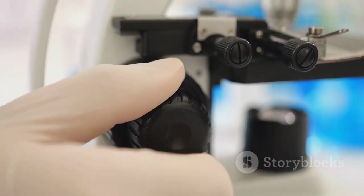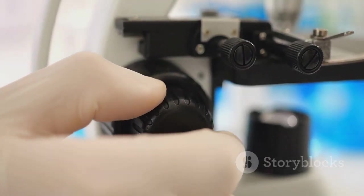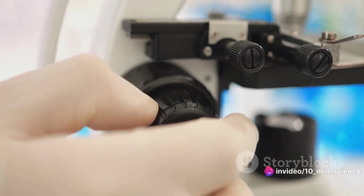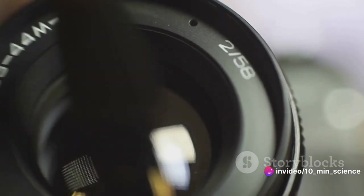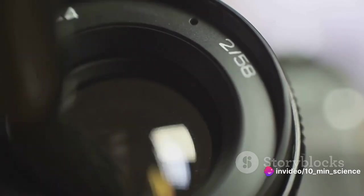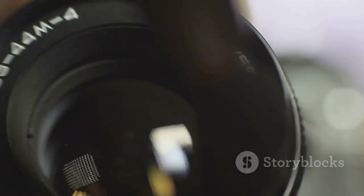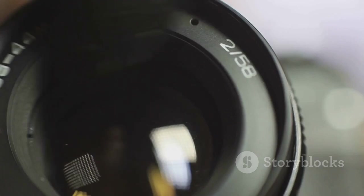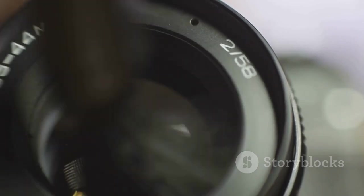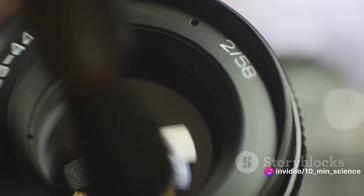Now onto cleaning. Use a soft, lint-free cloth or lens paper for cleaning the lenses. Regular household materials like paper towels can scratch the lens. When cleaning, don't apply solution directly onto the lens. Instead, dampen your cloth or lens paper with a special lens cleaning solution and gently wipe the lens in a circular motion.